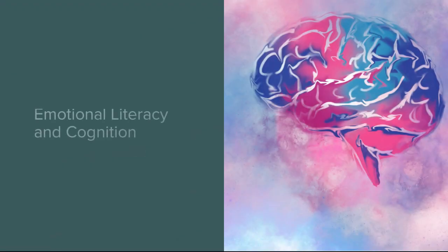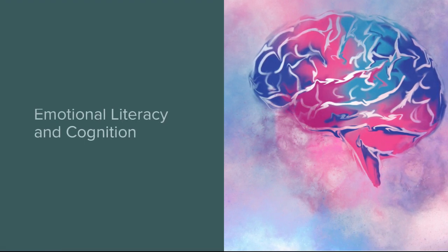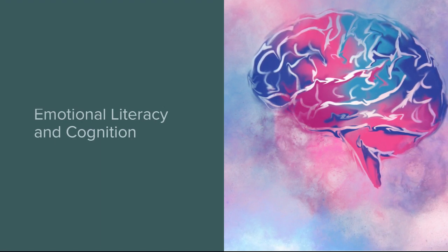Emotions trigger hormonal responses within our brain that can have a profound impact on our ability to focus, process, and attend to new information. Without the necessary emotional skills to regulate our emotions, our brains are not able to carry out the important functions that are necessary for learning, relating, or thriving.